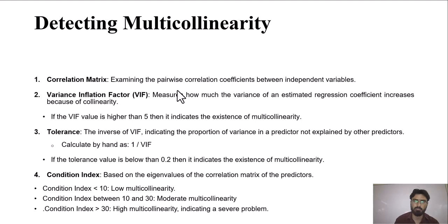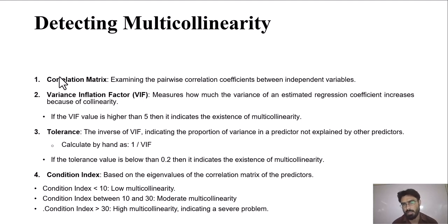When you create a correlation matrix, you have to see its values. If the correlation matrix values are above 80%, then you have to resolve this issue, because this indicates that there is an issue of severe multicollinearity in your dataset.